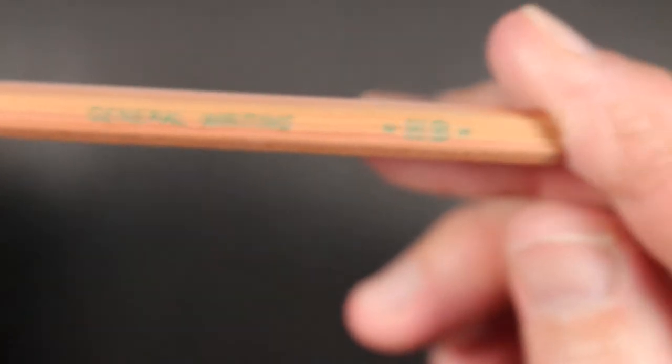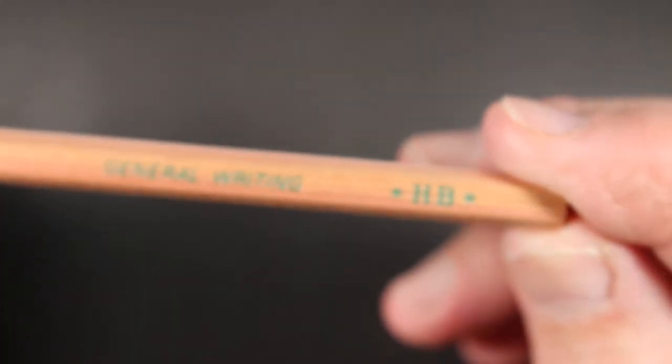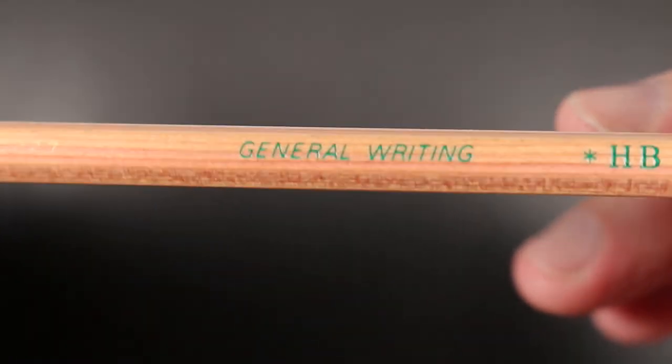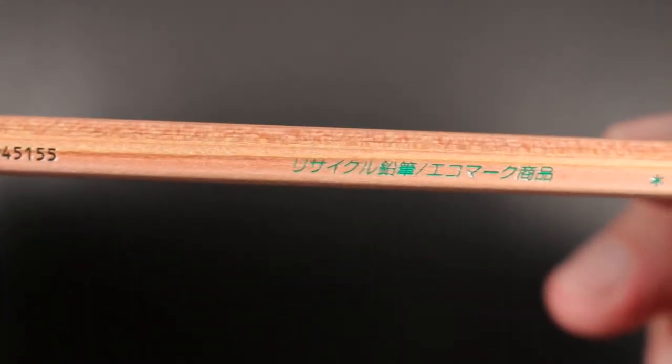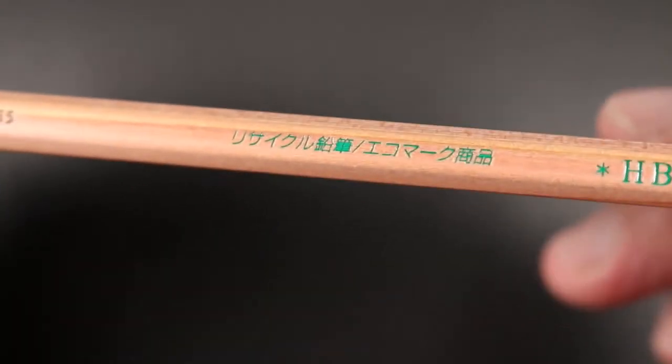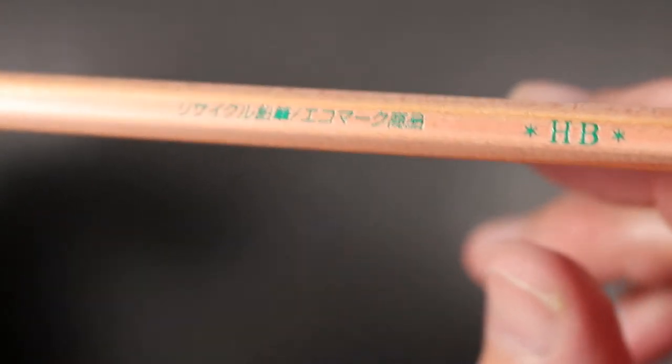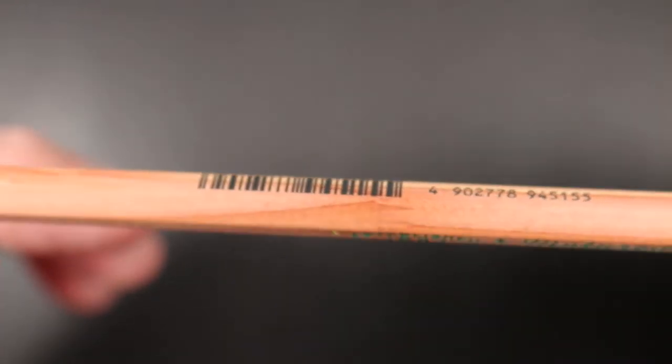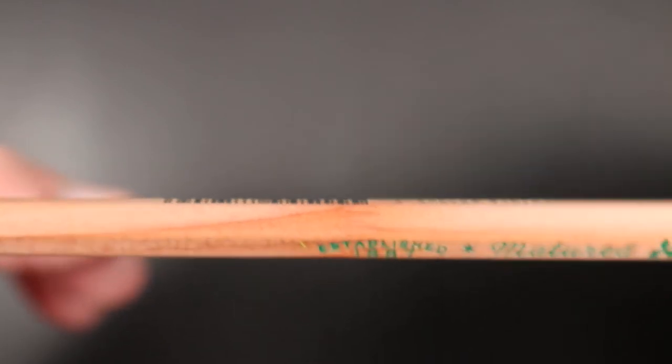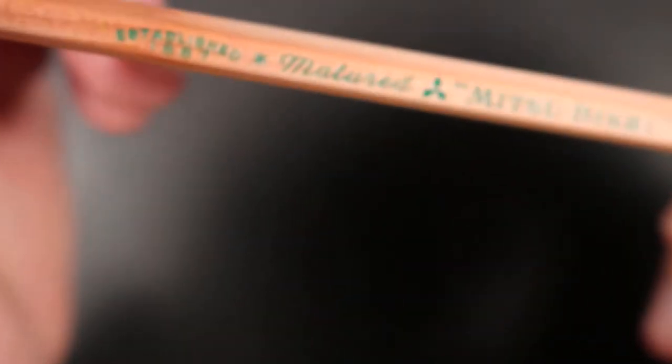Then here on this side it says general writing, again HB general writing. And then here, perhaps that says general writing in Japanese, I don't know, maybe someone could tell me. And then HB again. And here is our UPC code and item number. So that is the pencil right there, the Mitsubishi 9800 EW.